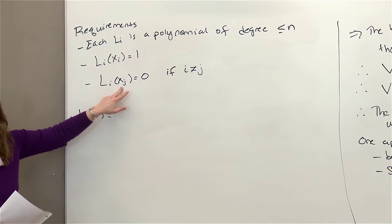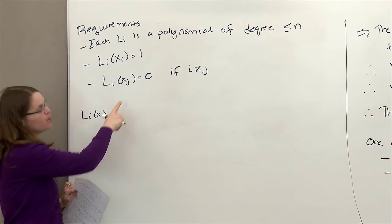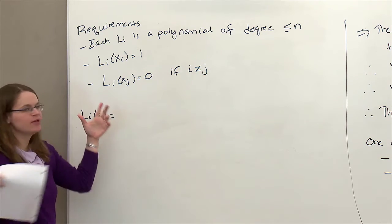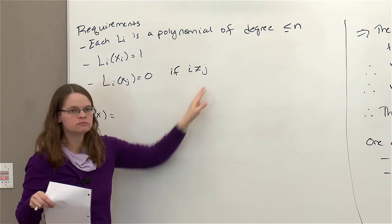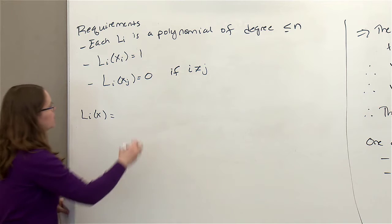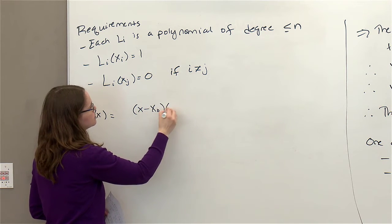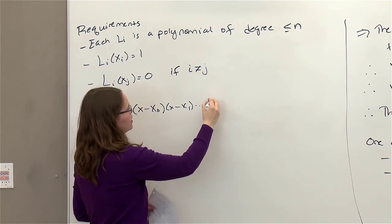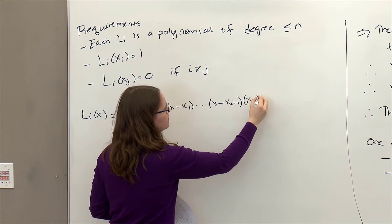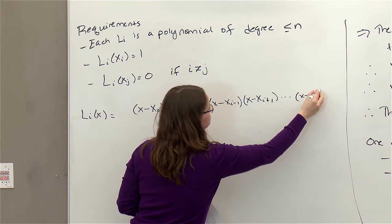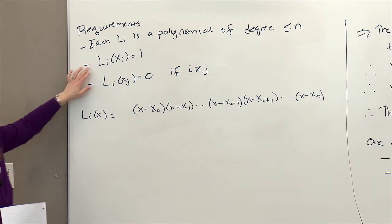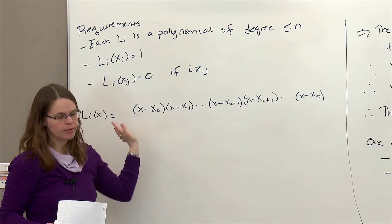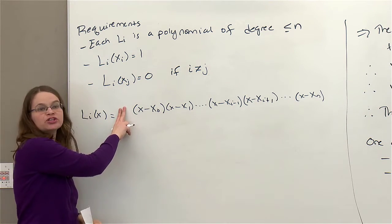If we can do that, then we're done — the i-th basis function picks up the i-th data point. Let's see if we can construct a polynomial that does this. I've specified n roots of this polynomial — we have n+1 data points, and I'm ignoring one. So x-naught, x1, x2, up to xn, excluding xi, are all roots of this polynomial. I should be able to write my polynomial by factoring out these roots. This is a Lagrange polynomial — I skip the i-th one. This polynomial has roots at all the right places, at these xj.